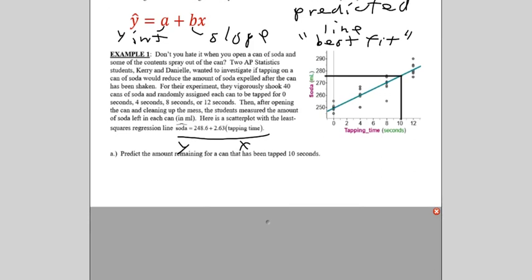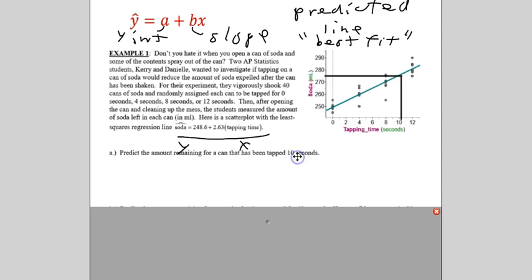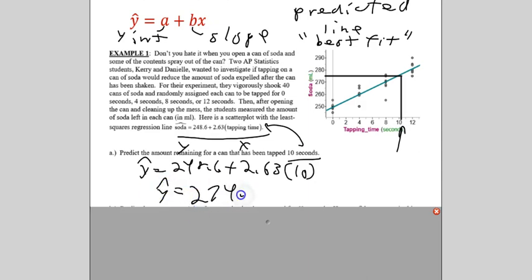What we're going to do is, since this is time, if we plug 10 into our equation for time, that should give us a predicted amount. So, we say y hat equals 248.6 plus 2.63 times 10. We just move the decimal over, 26.3 at 248.6, and we get y hat equals 274.9. And that's milliliters. Well, we are guessing around 275. Pretty good guess, because 274.9 is about as close as you can get to 275.